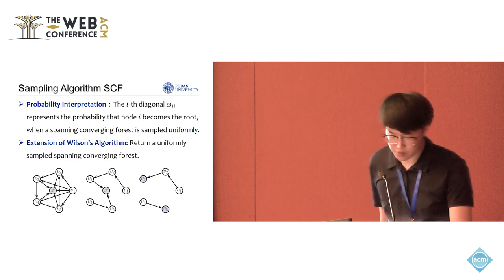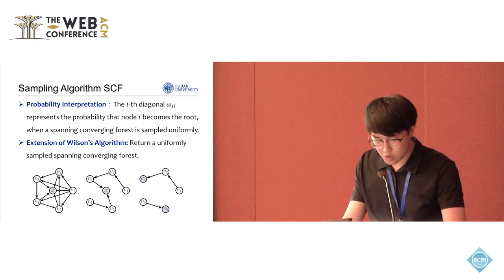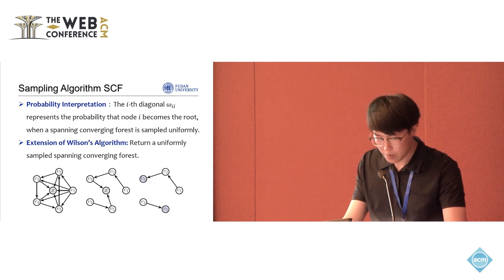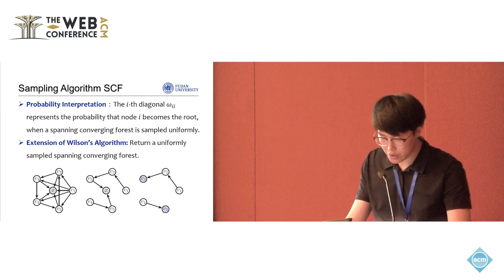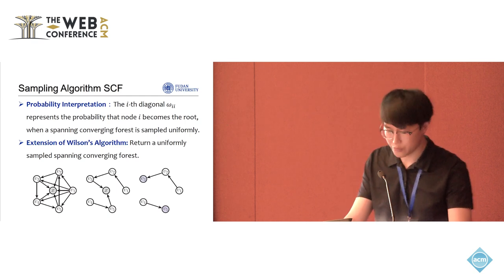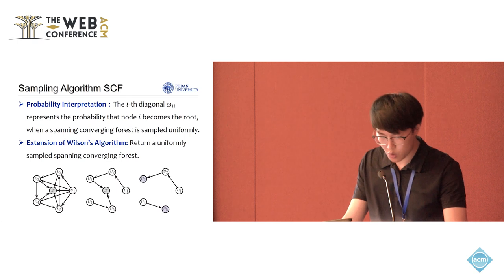This process involves several steps. First, we construct an augmented digraph G prime by adding a new node x. Then, for each node i in the original graph, we add a new edge i to x to the augmented graph G prime.